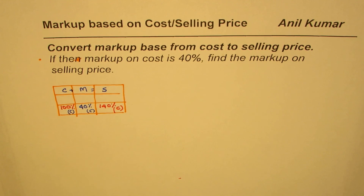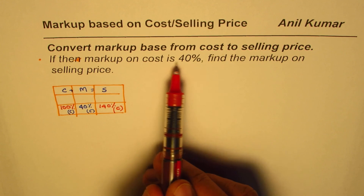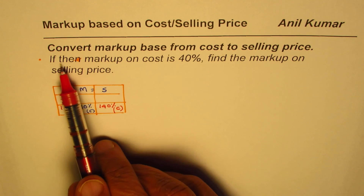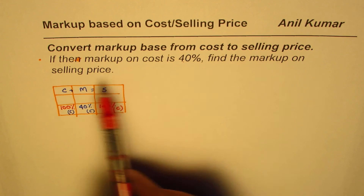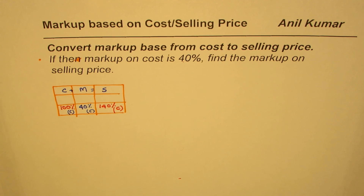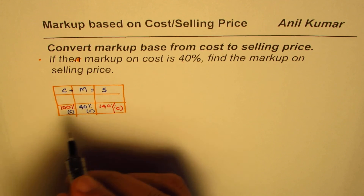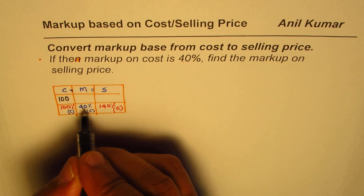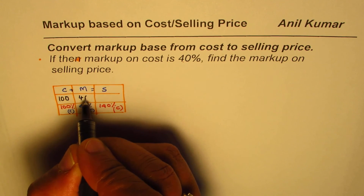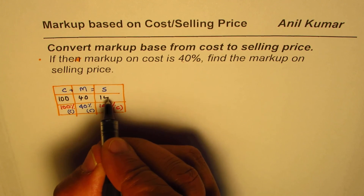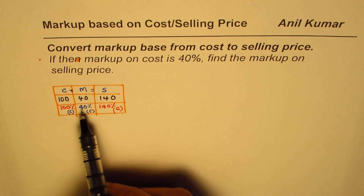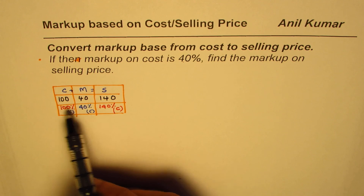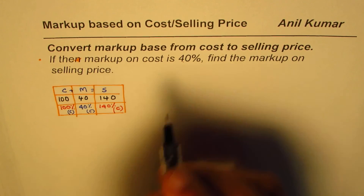The question is: if the markup on cost is 40%, find the markup on selling price. We can take some values for easy calculations. If cost price is 100, markup is 40, and selling price will be 140. Clearly, the markup is 40% of cost. We need to find markup on selling price.